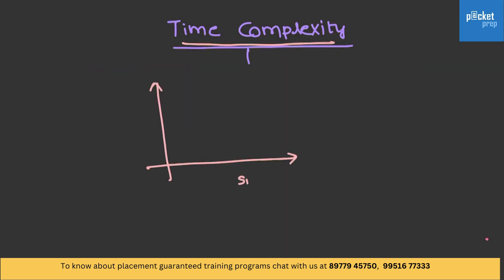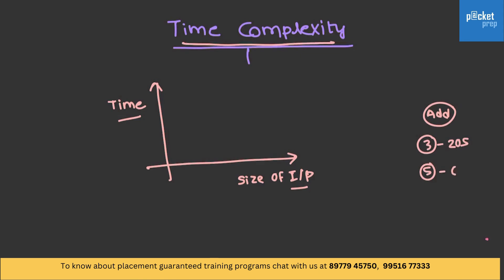Consider this graph. I have used size of input and time taken for execution on different axes. What is the relationship between the size of the input and the time taken? Suppose if you are performing an addition — to add 3 numbers it may take around 20 seconds, and to add 5 numbers it may take around 60 seconds. So when you increase the size of the input, the time actually increases. For example, if it is sorting, we are giving some numbers and plotting the time taken. This is the curve which represents the time taken for execution of our program, and let's call it f(n).